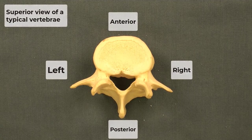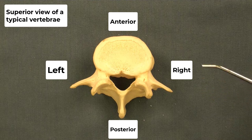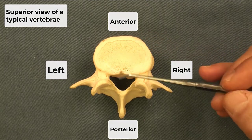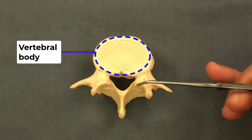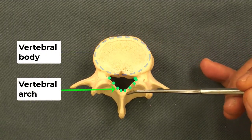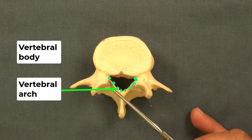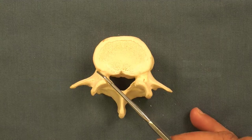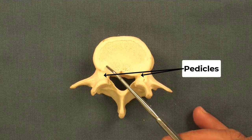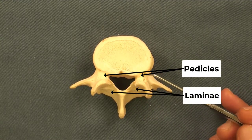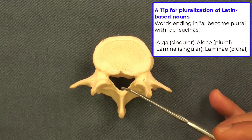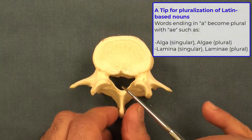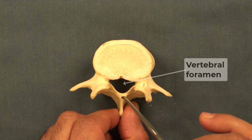In this shot, we're walking you through the anatomy of a typical vertebra. A typical vertebra is formed by two main parts: the vertebral body on the anterior side and the vertebral arch on the posterior side. The vertebral arch on each side is formed by the pedicle, which attaches to the body, and the lamina. Between the vertebral body and vertebral arch, we have an opening or foramen — the vertebral foramen.